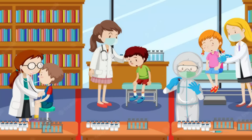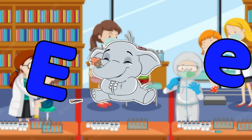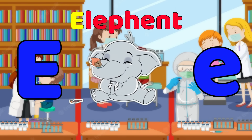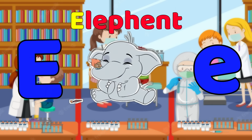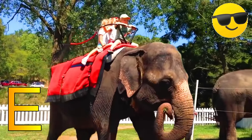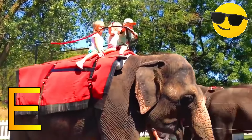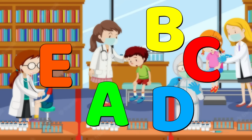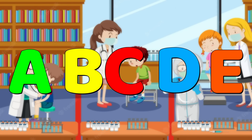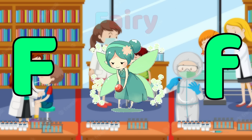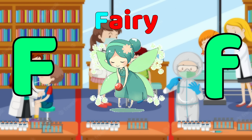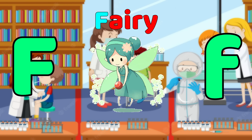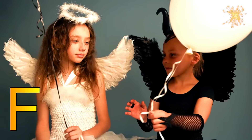E is for Elephant. E-E-Elephant. E-E-Elephant. E-Elephant. F is for Fairy. F-Fairy. F-Fairy. F-Fairy.